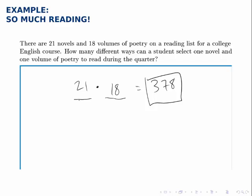Notice if we flip things around and made the choice of poetry first and the novel second, it would just be 18 times 21, which is still 378. So the order that we think of the choices doesn't matter, it just matters that we consider that there are two separate choices that we're making and we have a certain number of ways of making each choice.